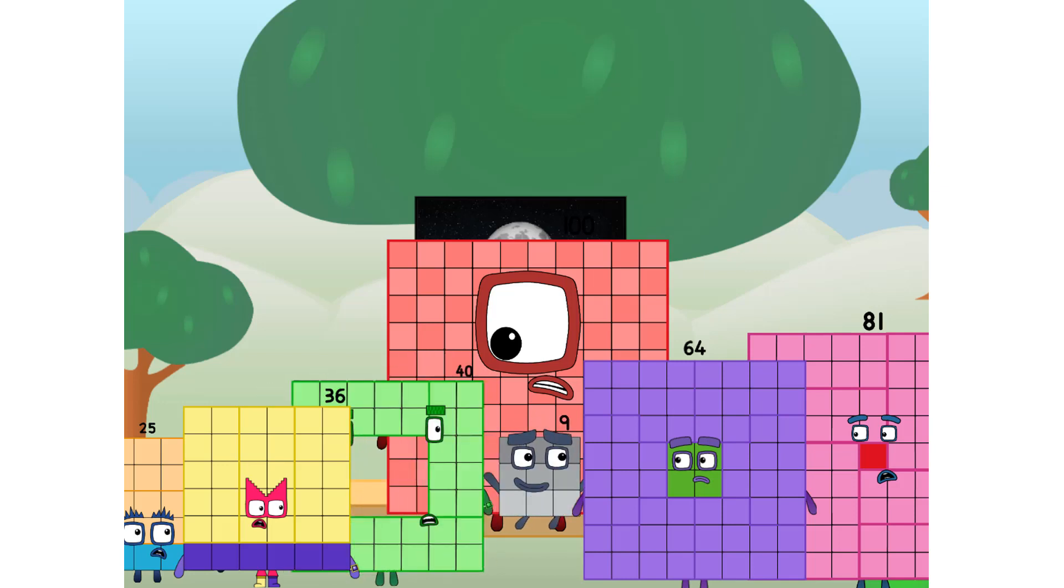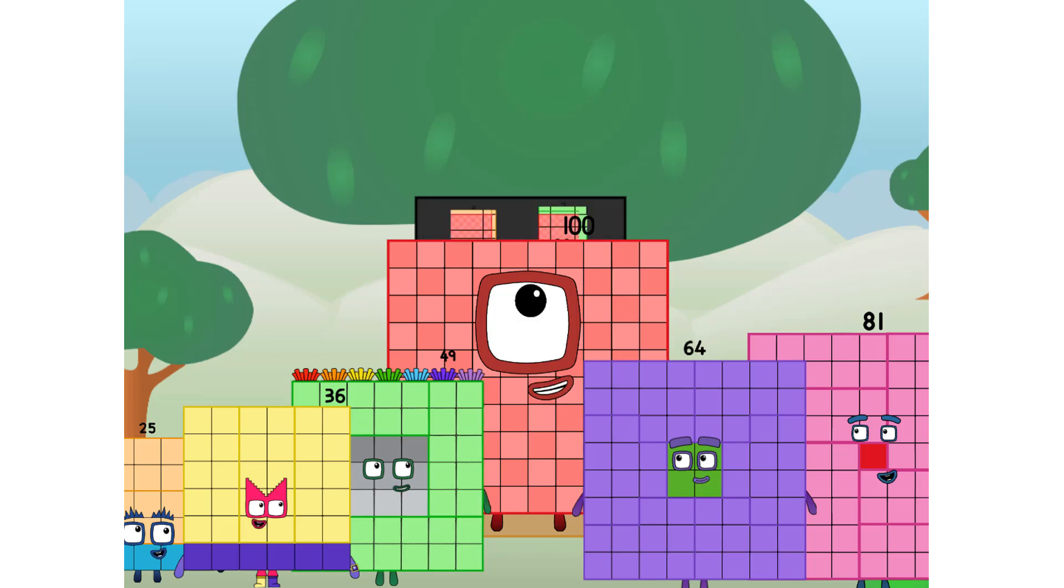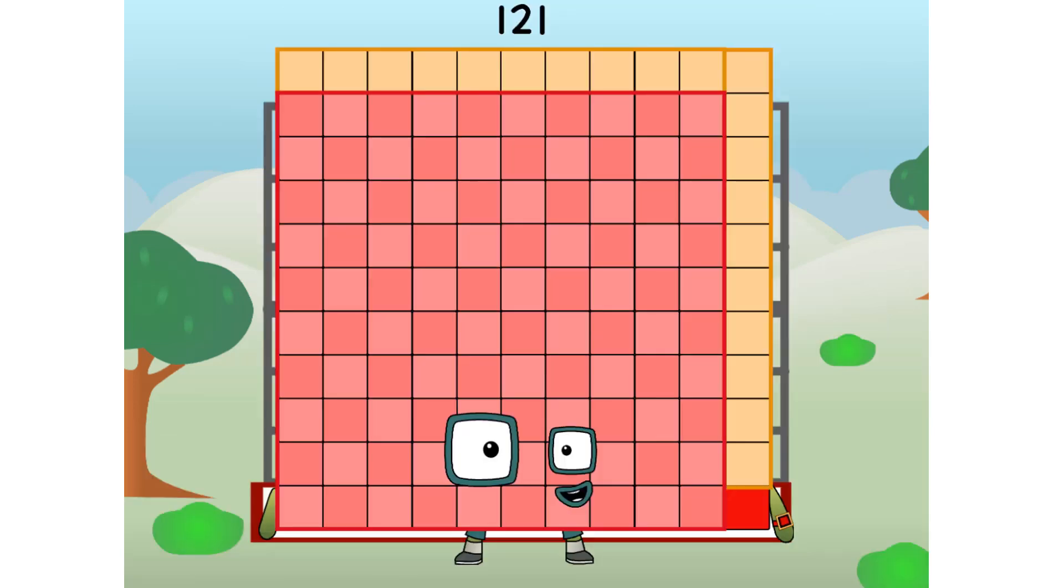Sorry about that. All the way up there? We call in some friends. Some big square friends. 121 commencing football test flight. All systems checking out. 11 by 11. Wish me football.